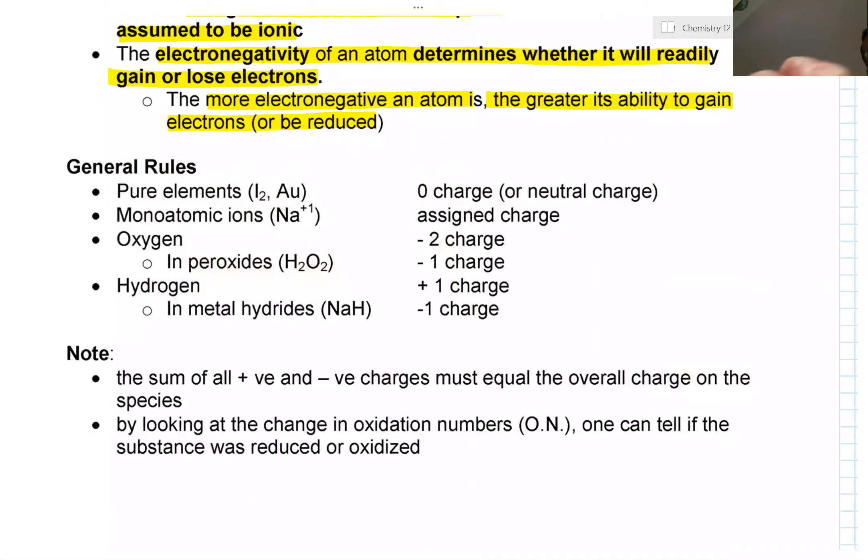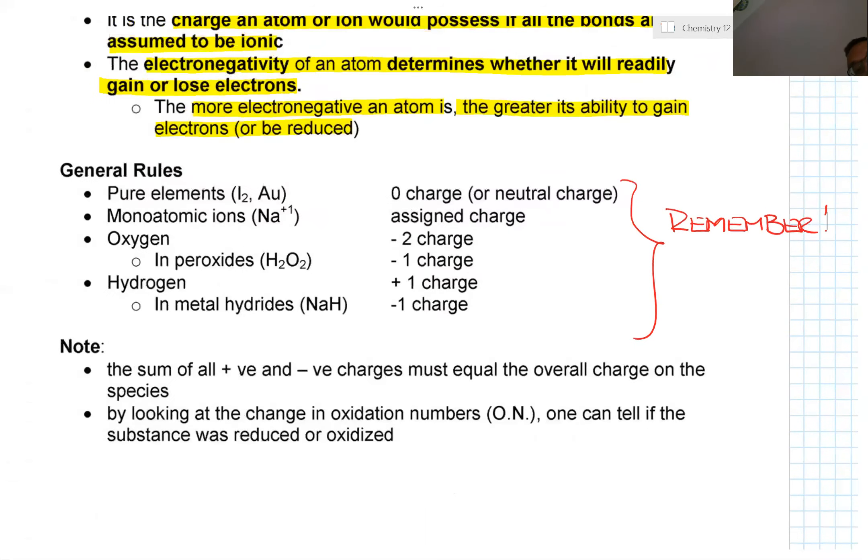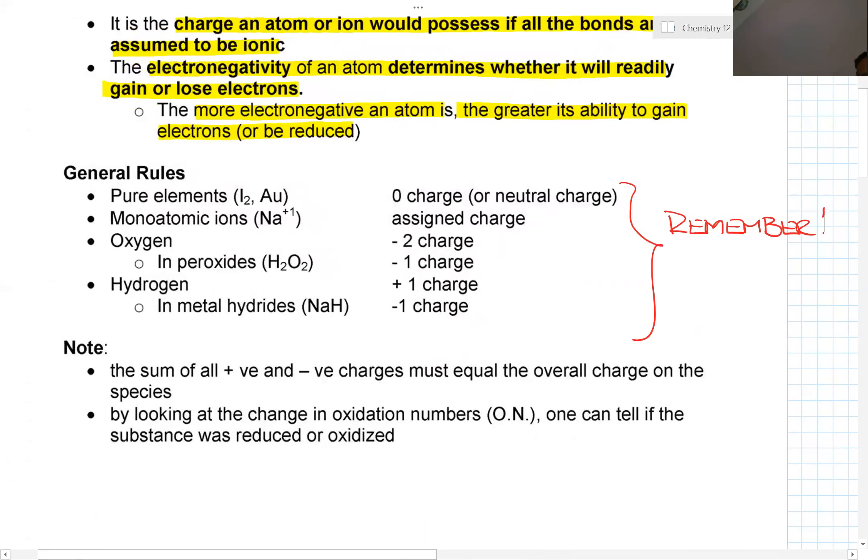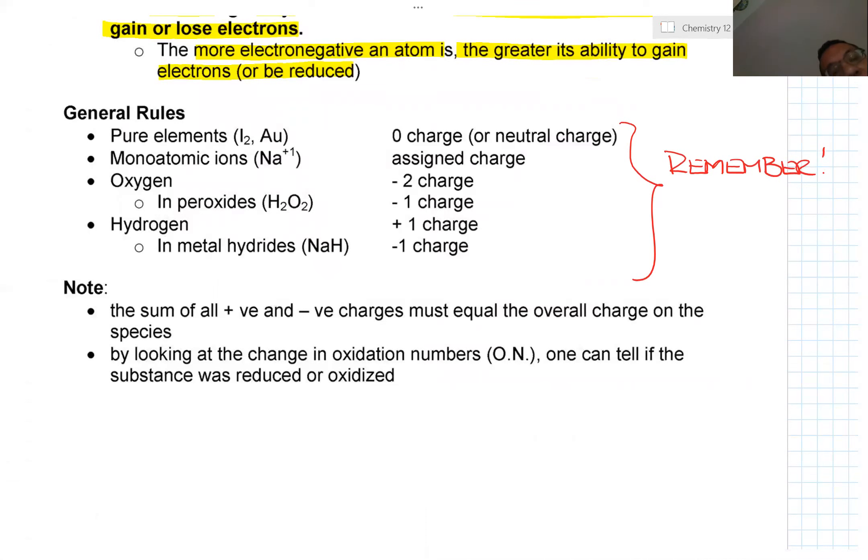Now there are some general rules. Pure elements are zero. Monoatomic ions are whatever the assigned charges are like potassium, calcium. Oxygen is minus two charge, in peroxides it's minus one. Hydrogen is plus one, but in metal hydrides it's minus one.